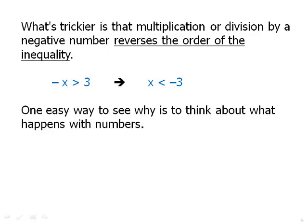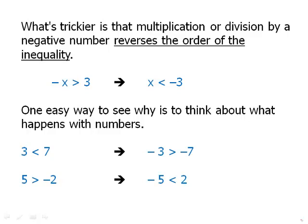An easy way to see why this works is with ordinary numbers. It is true that 7 > 3 and 5 > −2. When we multiply everything by −1: −3 > −7 is still true (−3 is to the right of −7 on the number line), and −5 < 2. So in order to maintain true statements when we multiply by −1, we have to reverse the direction of the inequality.